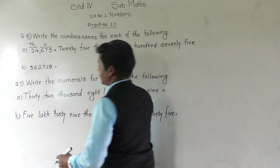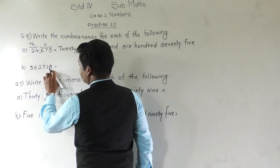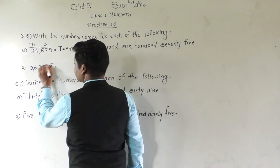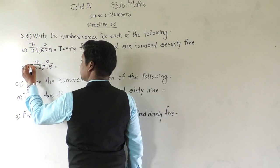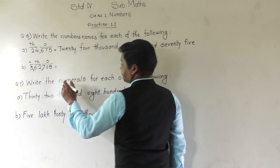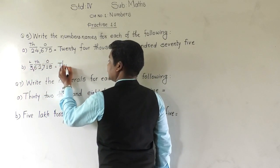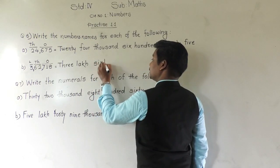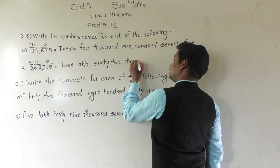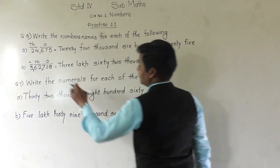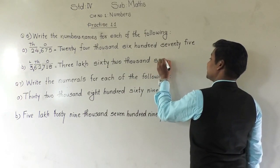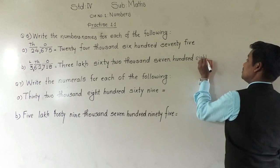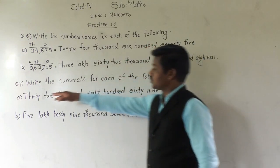For the next example — a six-digit number — put the comma from the right: three digits for the ones group, then the thousands group, then the lakh group. In the lakh group there is 3, so three lakh. In the thousands group there is sixty-two, so sixty-two thousand. In the ones group it is seven hundred and eighty. The number name is three lakh sixty-two thousand seven hundred and eighty.